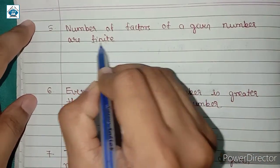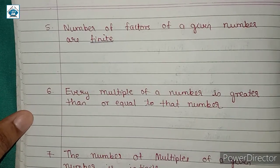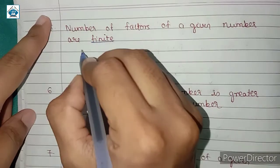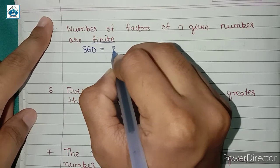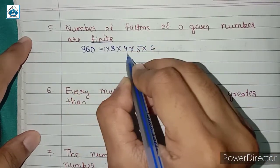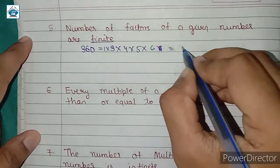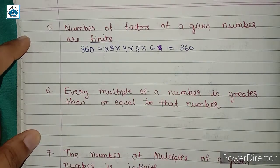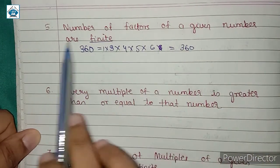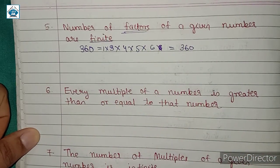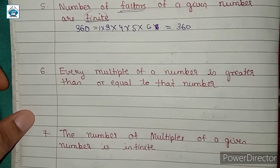Next: the number of factors of a given number is finite — meaning they are countable. Consider the number 360, which equals 1 × 3 × 4 × 5 × 6. The factors of 360 include 1, 3, 4, 5, 6, and so on — they are countable. Any number's factors are finite, because only numbers that completely divide it qualify, and those are always a limited, countable set.